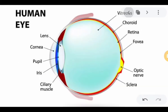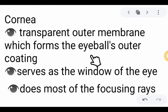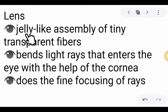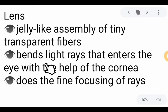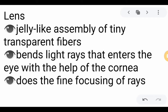Then we have here the lens. The lens is a jelly-like assembly of tiny transparent fibers. It bends light rays that enter the eye with the help of the cornea. If the cornea does the focusing of rays, the lens does the fine focusing — the more precise sharpening of the light rays.